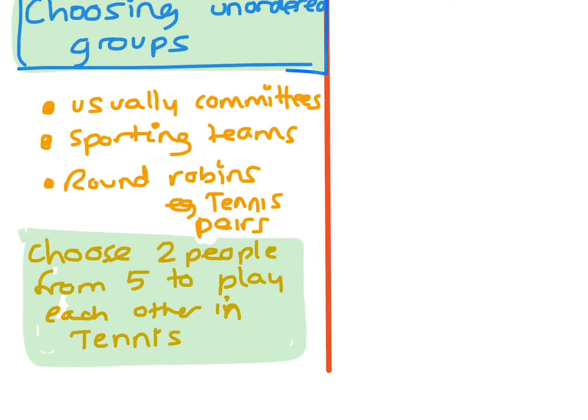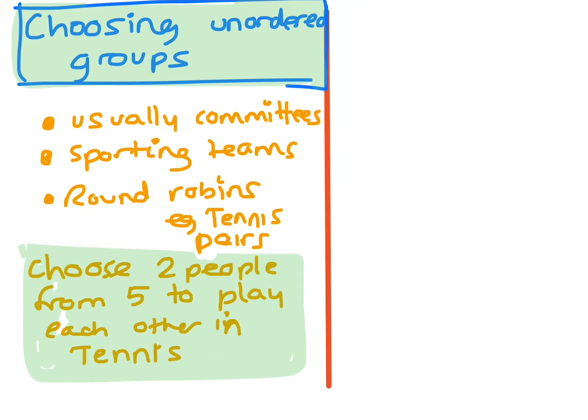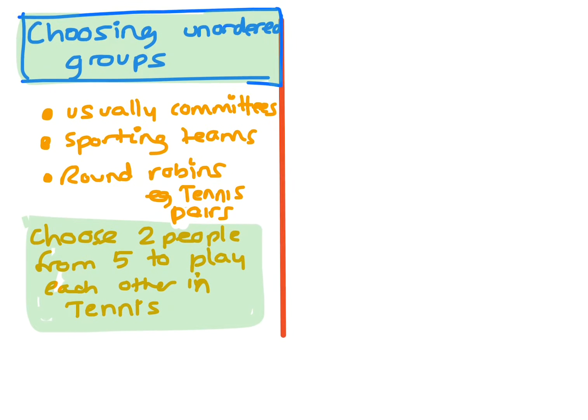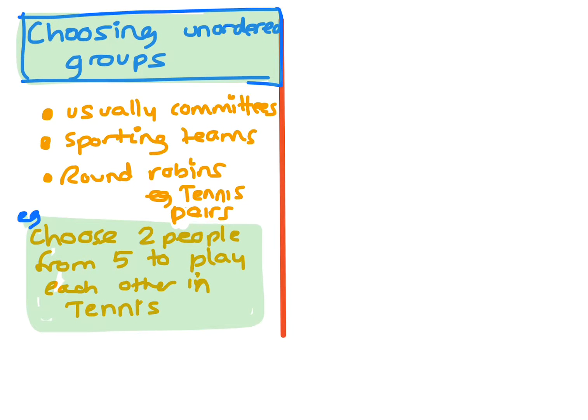So let's look at choosing unordered groups. Usually you're looking at committees where you just choose the committee, you don't care what position they hold. Positions like the permutations using the box method really take into account the order. Maybe choosing a sporting team or like round robin, when you're picking that it really doesn't matter about the order. So here's an example: we're choosing two people from five to play each other in tennis.